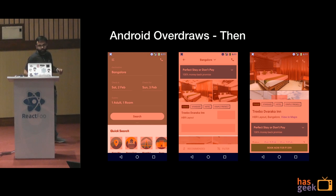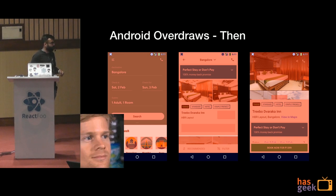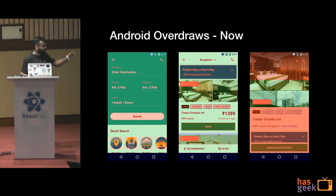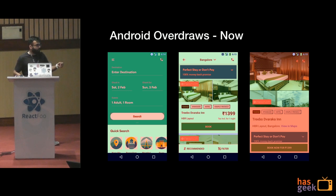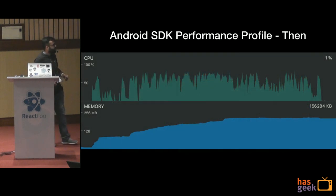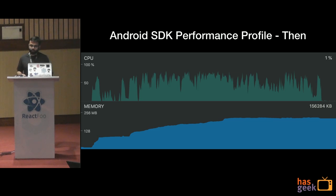This is what our overdraws used to look like back then. And this is what it looks like right now — the app looks exactly the same, but there are far fewer overdraws. There are a few places where extra background color still exists, but it doesn't impact usability at all. There is clearly still room for improvement — for example, in the hotel space the last screenshot still has room to improve — but we have come a long way.